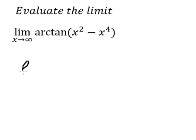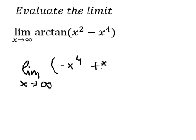We know that limit of x approach to positive infinity. We know that x to the power of 4 is the highest in here, so we have negative x to the power of 4 plus x square.